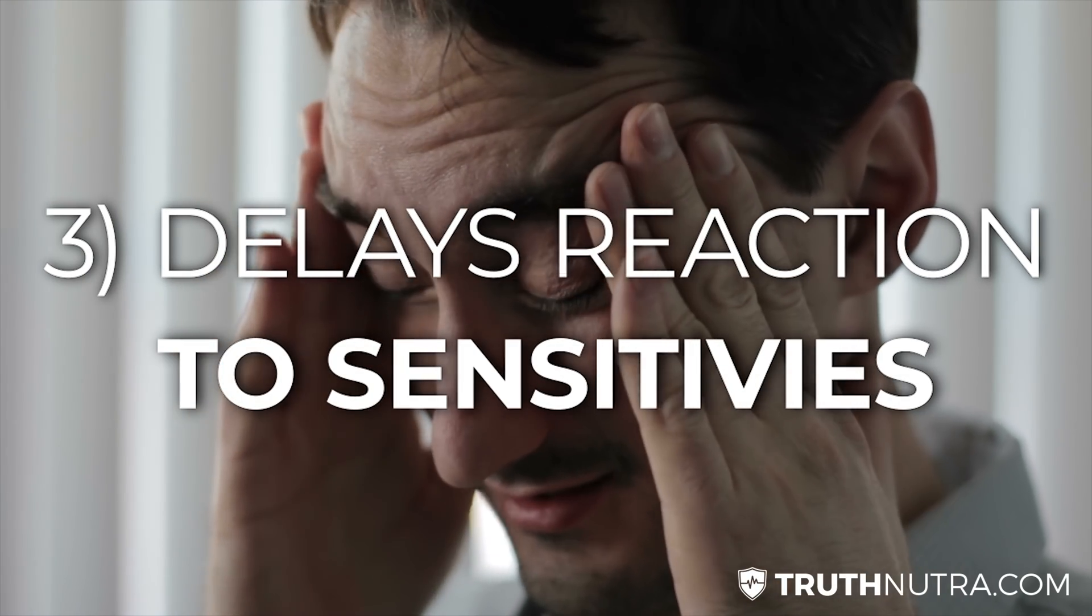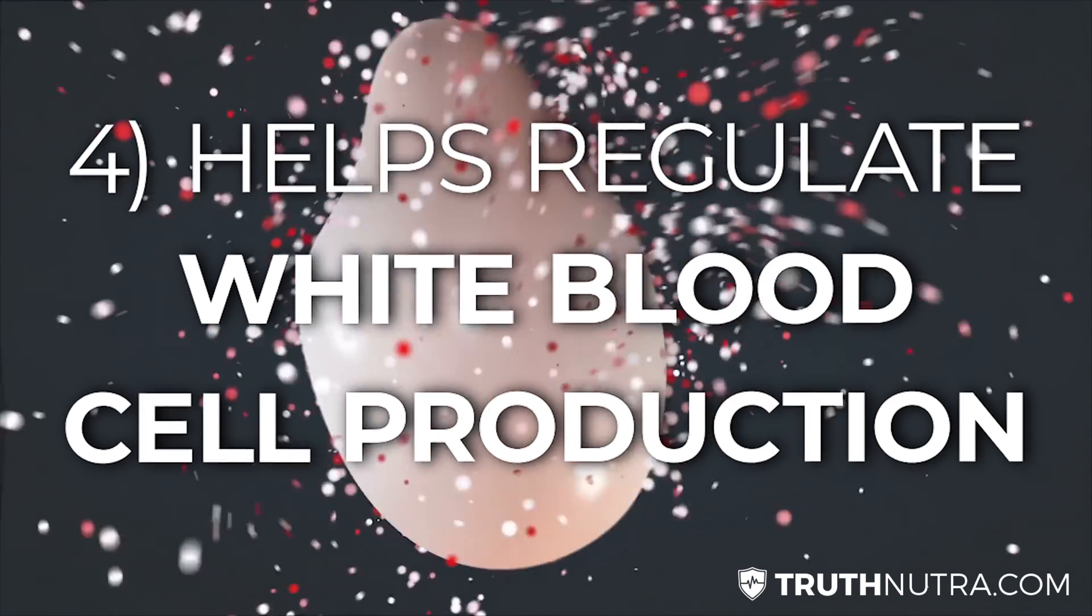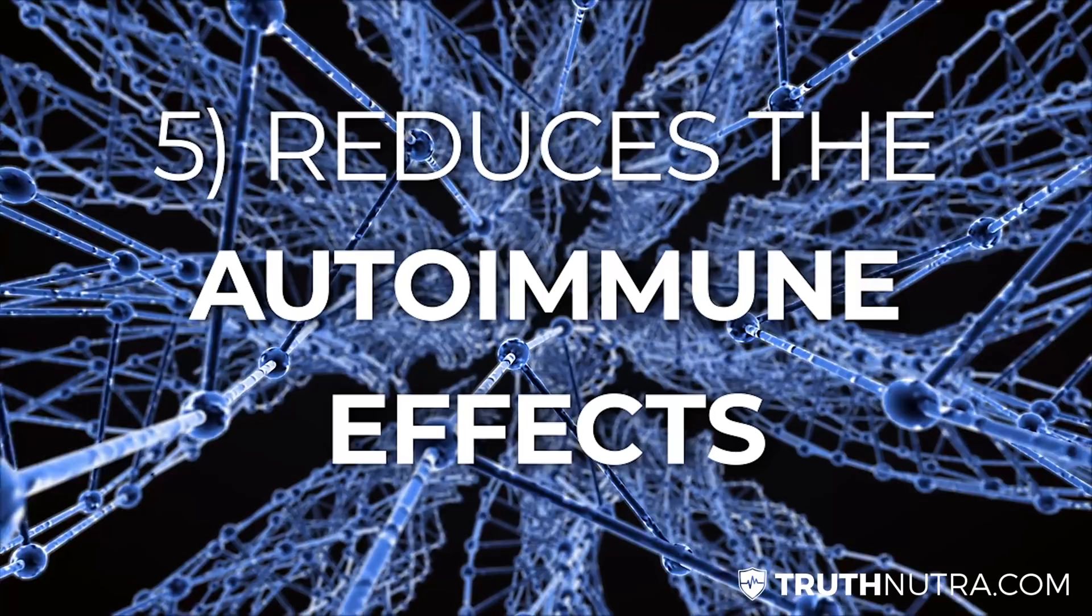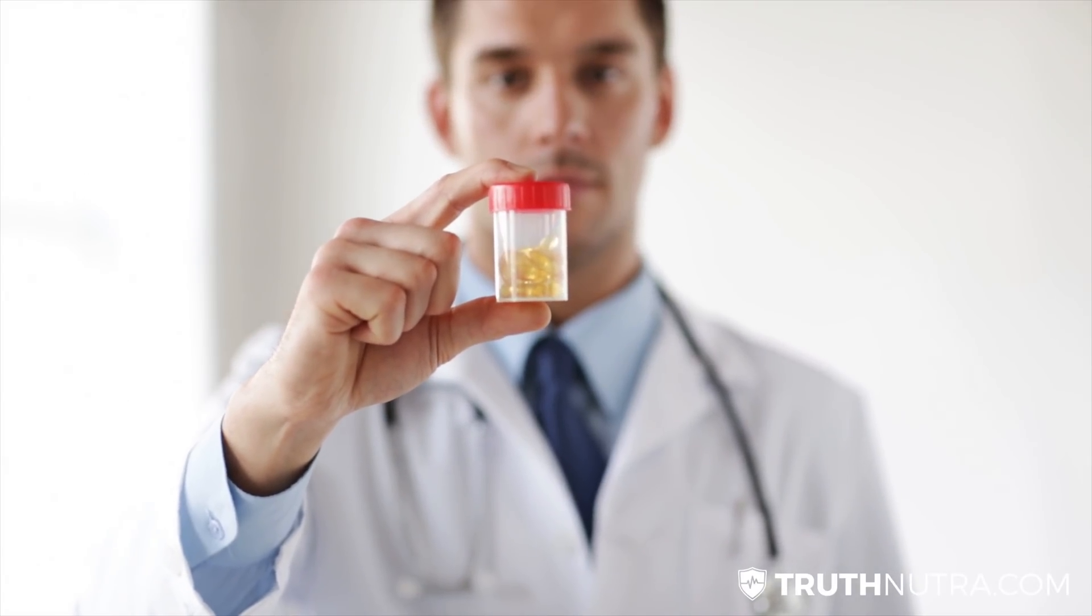Those cytokines, when they go crazy, your body starts to have this big inflammation response and it can lead to these arthritic issues, so it helps with that as well. It also delays reactions to any sensitivities you might have, helps regulate white blood cell production and T cell interactions, and reduces the autoimmune effects related to immunoglobulin G antibodies in the body.